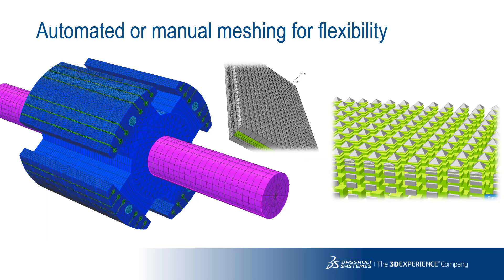Automatic tetrahedral meshing is the easiest way to fill a domain with finite elements. However, for certain problems, to achieve the required accuracy within computing constraints, the user really needs to deploy hexahedral meshes with close control over discretization. Opera's meshing approach of fully automatic, fully manual, or mosaic gives the user the ultimate control.